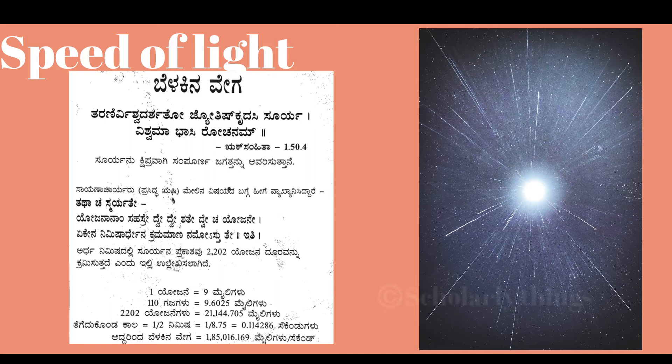Yojana Naam Sahasre Dve Dve Shate Dve Cha Yojane Yekina Nimishar Dhena Kramamana Namostute — Sunlight travels 2,202 Yojanas in half a minute, which approximates to 185,016.169 miles per second.